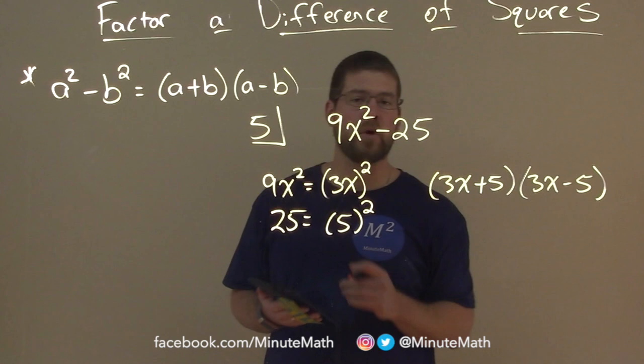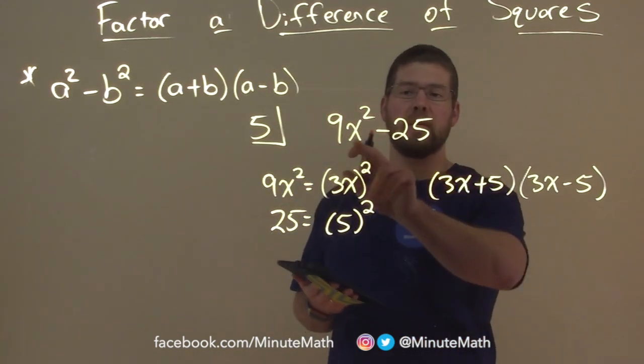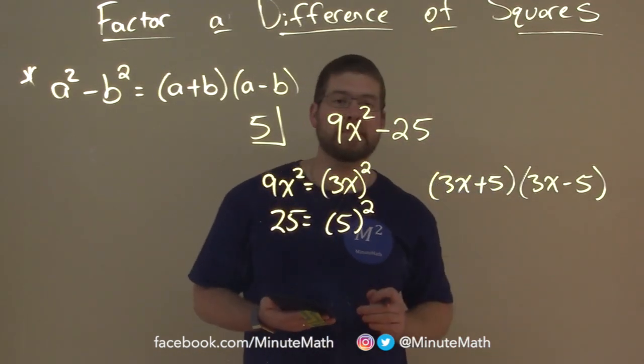And if we wanted to check our work, we could just foil this back out and we would get 9x squared minus 25.